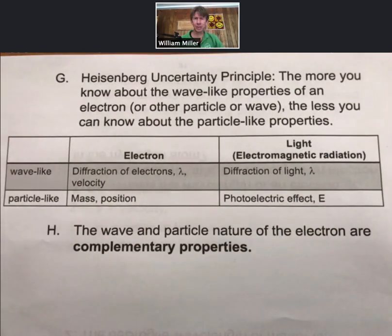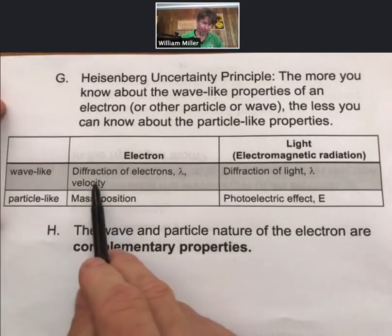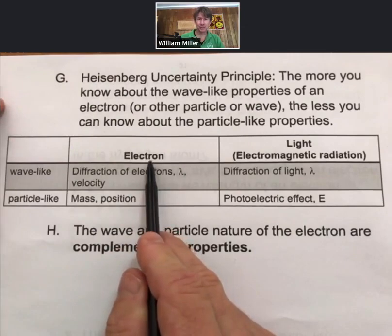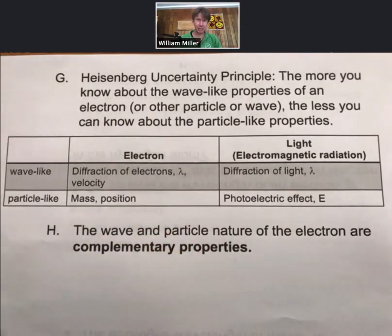Unlike classical mechanics, where if you know the position and velocity of something like a baseball, you could very easily solve a few equations to figure out where it would be a second or two seconds, or as long as you know how long it's traveling, where it will be in the future. And what quantum mechanics says is very different. It says, since you can't know everything about the position and the velocity of an electron in particular, you can't predict where it will be in the future with 100% certainty.